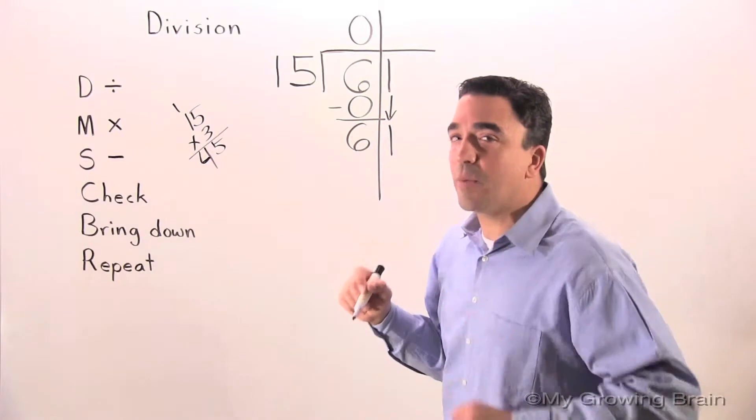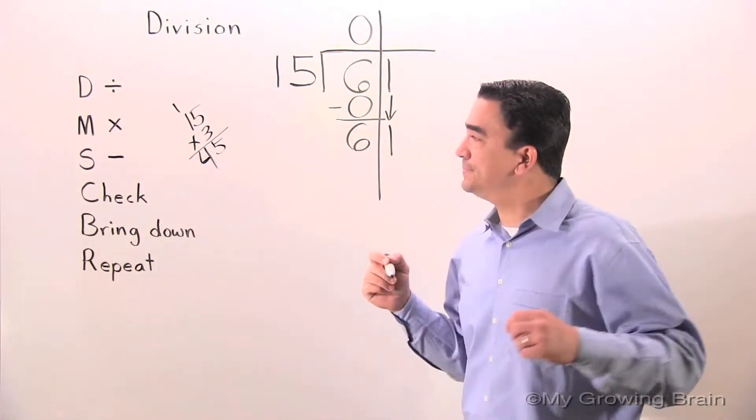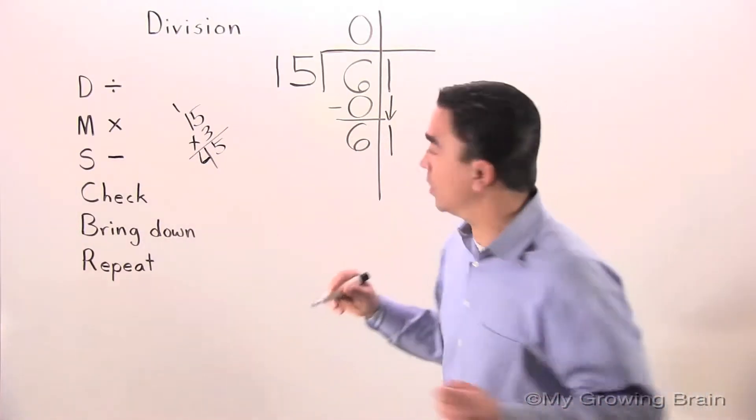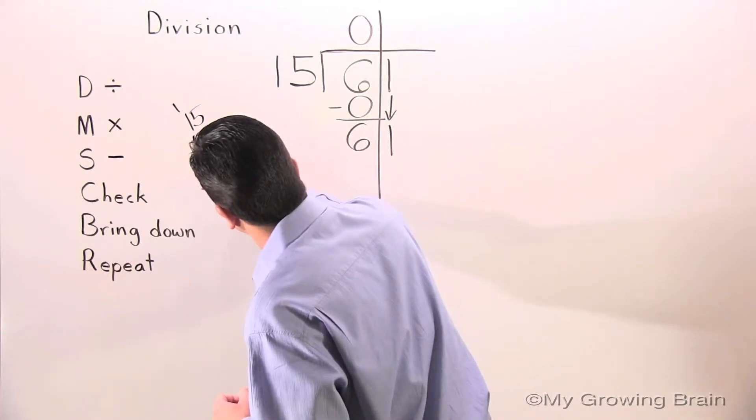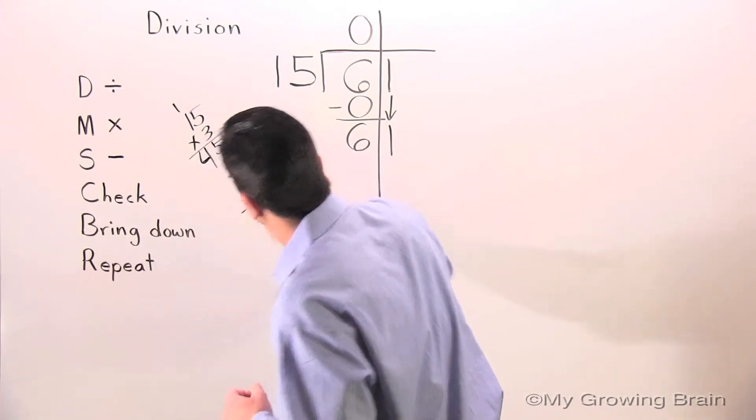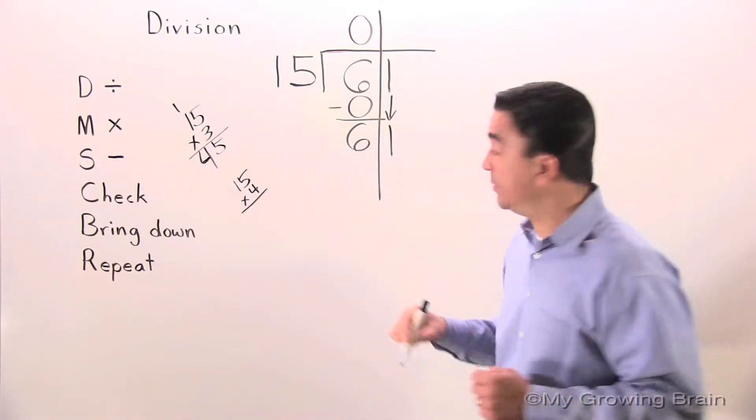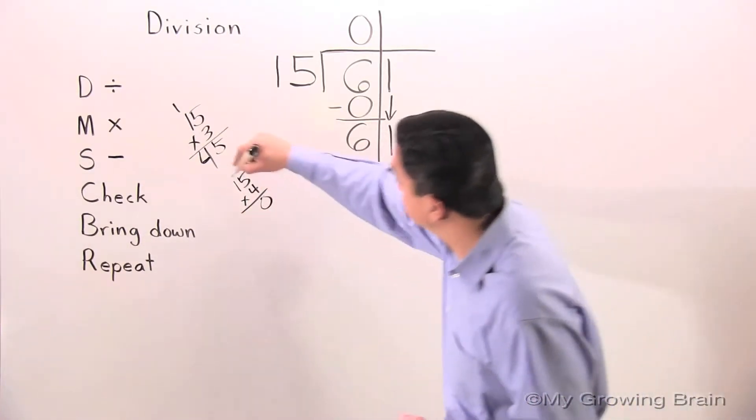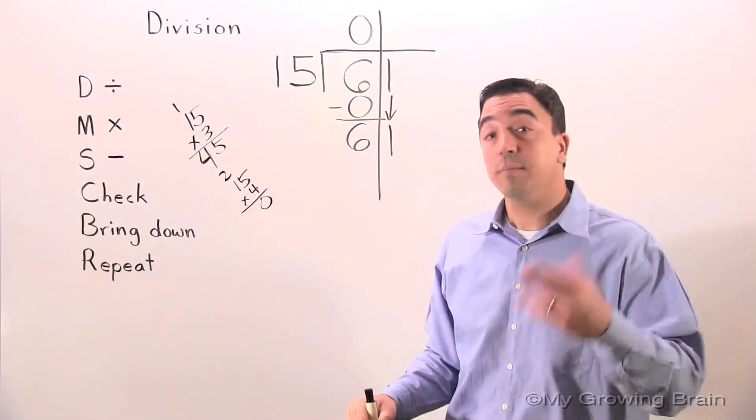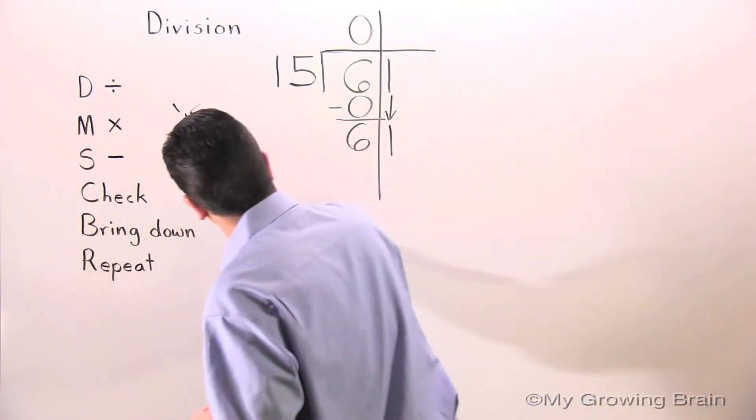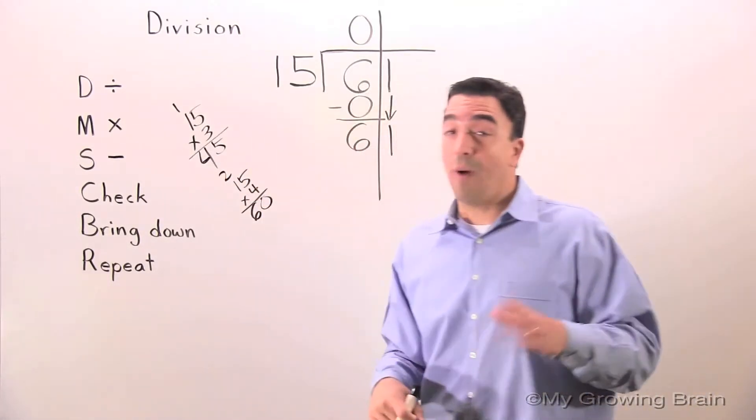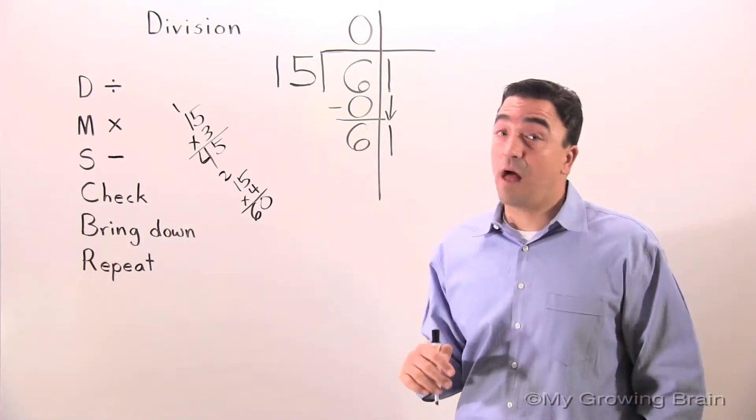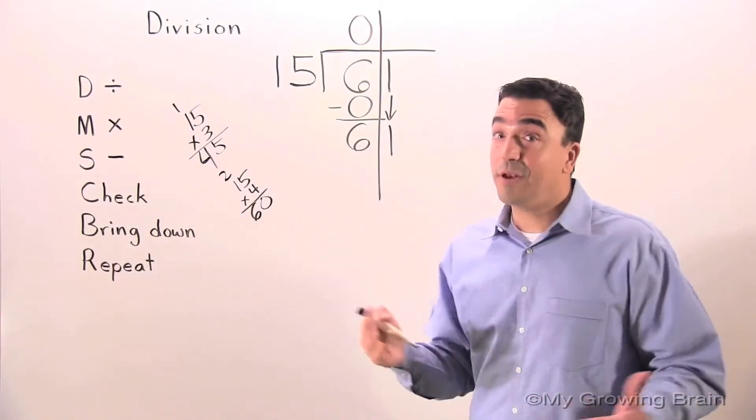That's close to 61, but I still think we can get closer. Let's try 15 times 4. 4 times 5 is 20, regroup the 2. 4 times 1 is 4, plus 2 is 6. 60. Wow, 60 is a lot closer to 61. I'm going to try that.